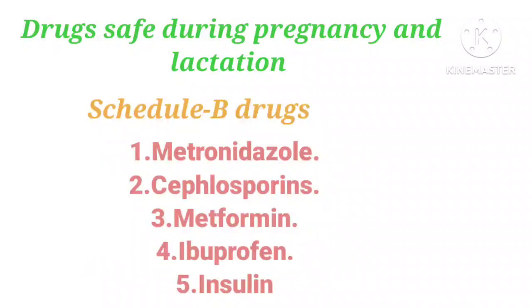For schedule B drugs, doctors prescribe based on the patient's condition. Metronidazole, which is an antifungal antibiotic, can be given for diarrhea in pregnant ladies. We can also give ORS and cephalosporins like cephalexin. Metformin is given to control blood sugar, ibuprofen as an NSAID to treat pain, and insulin when the sugar level is high — insulin can be given safely. But don't prescribe yourself — doctors will prescribe these.